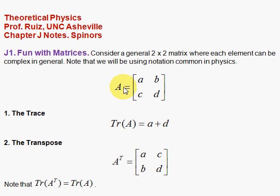So here is a general matrix A, which has elements A, B, C, D, which can be complex in general, and the first definition here or property is the trace. The trace of this matrix is simply to sum the diagonal components here and get A plus D.